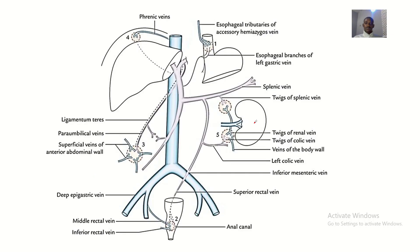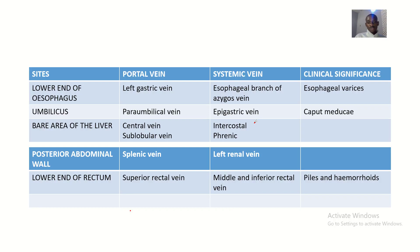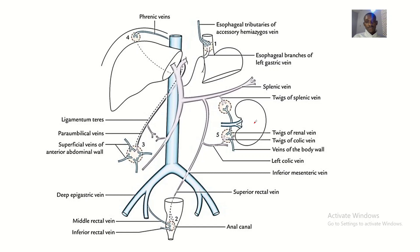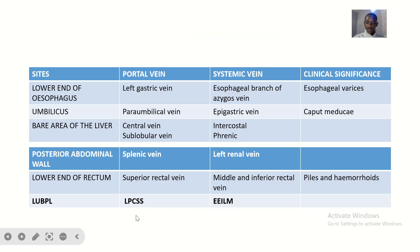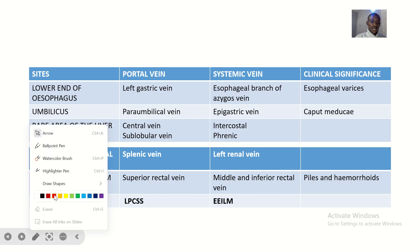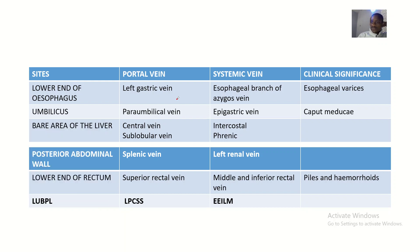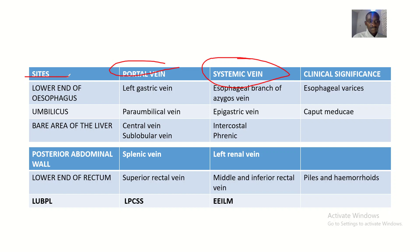We'll be doing a lot of work looking at this image. Portocaval anastomosis covers different sites of the body where portal veins are anastomosing with systemic veins. We have a table here showing the sites and their clinical significance.